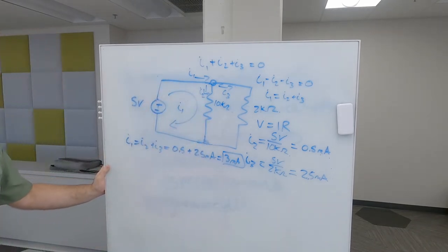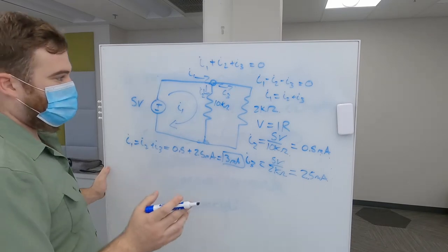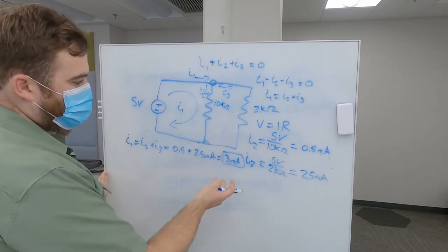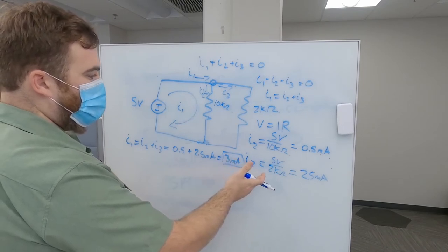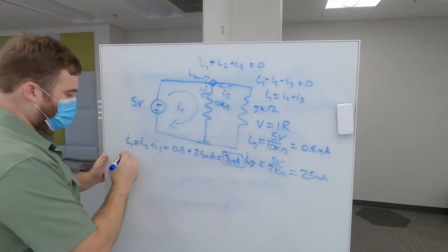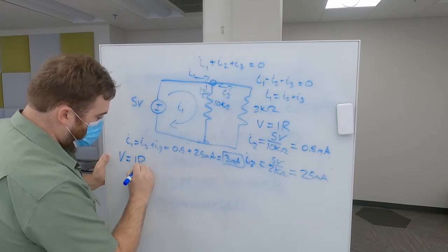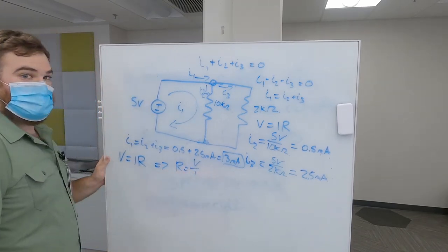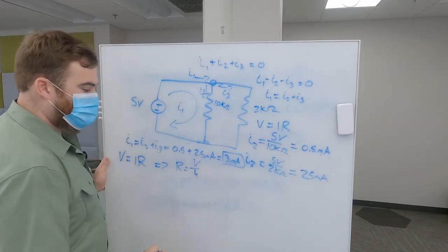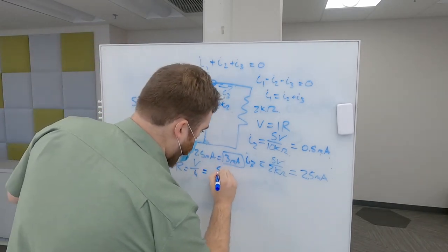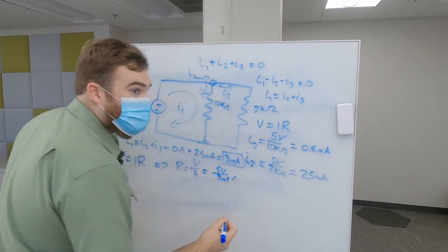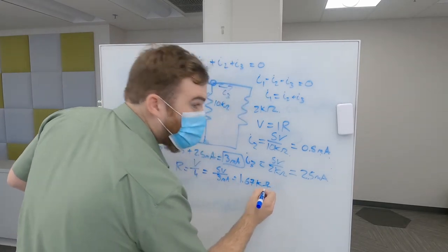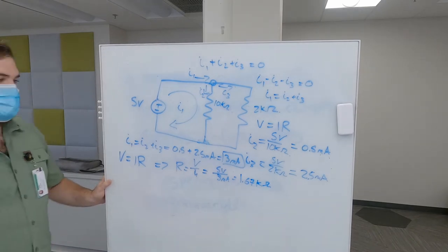So now we found the total current in the circuit. Let's find the equivalent resistance of the circuit. So you can find this in two ways here. The first way is just using Ohm's law because we know the total current and we know the voltage. We can just use Ohm's law. So if V equals IR, we can transform that and say R equals V over I. This is going to be I1 in this case. And so this is 5 volts divided by 3 milliamps, which gives us 1.67 kilohms. Double check me there. I think that's correct.